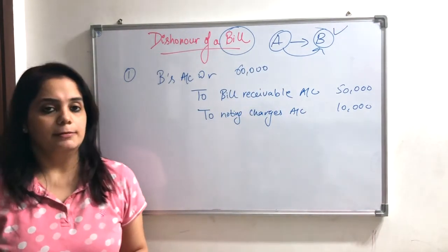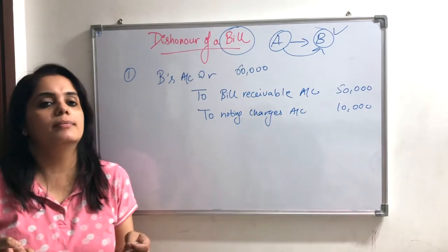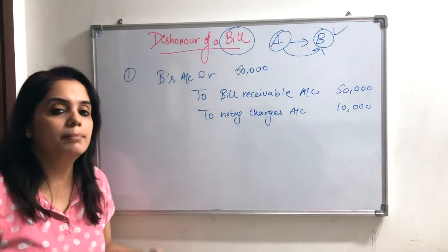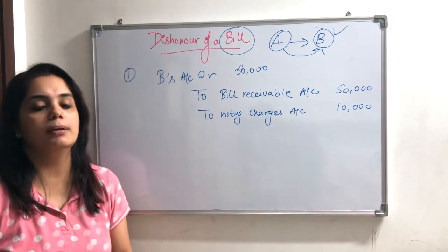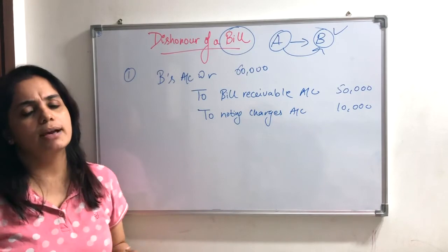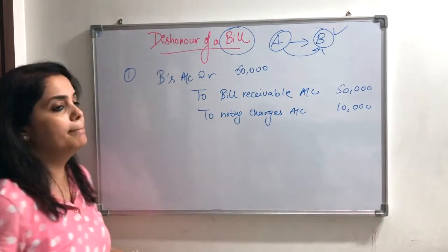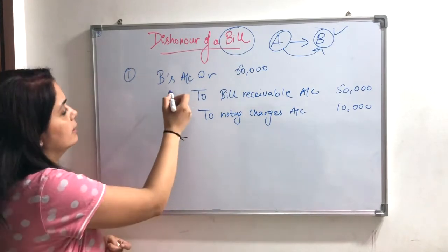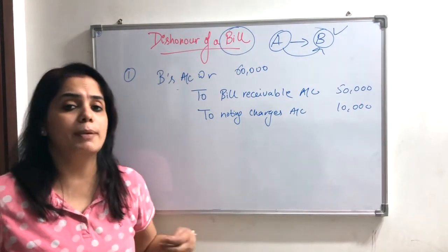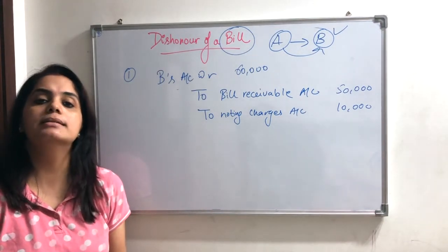Is it clear? This is the dishonor entry. Generally, as a shortcut method, if it is a dishonor — if anyone can't receive money — then the entry is: B's account debited to Bills Receivable. This is what we say in normal language. If you don't get money, B's account is debited to Bills Receivable. But if you do get money, then: Cash to Bills Receivable.